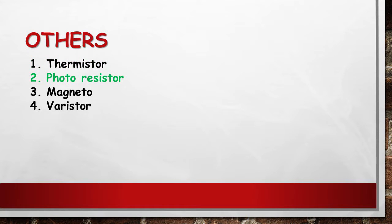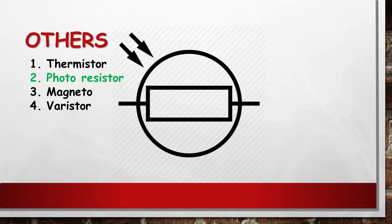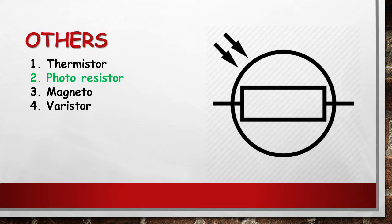A photoresistor is a light controlled variable resistor. The resistance of a photoresistor decreases with increasing incident light intensity. In other words, it exhibits photoconductivity. A photoresistor can be applied in light-sensitive detector circuits, and light and dark activated switching circuits. A photoresistor is made of a high-resistant semiconductor. In the dark, a photoresistor can have a resistance as high as several megohms.